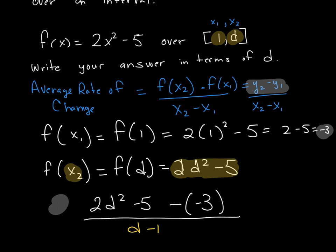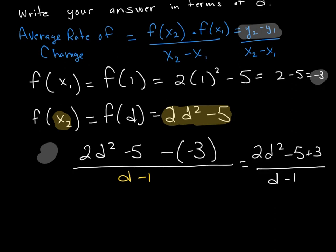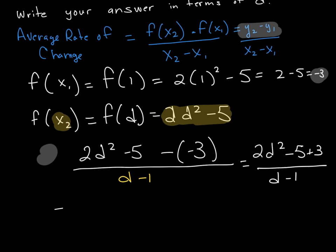Now, something a little interesting happens when I do this. If I simplify the numerator, I get 2d squared minus 5 plus 3, and in the denominator I have d minus 1. But I'm not done yet. I still need to simplify that a little bit more. In the numerator, I am left with 2d squared minus 2, all over d minus 1 in the denominator.